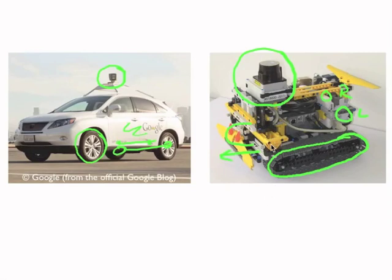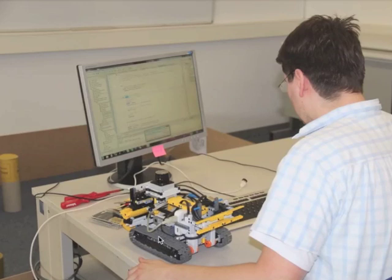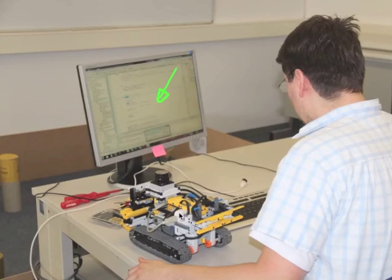Our device is actually much cheaper than the original Google self-driving car. While on the other hand there are some drawbacks — one of them being that this car is actually a self-driving car, whereas our car is currently driven by Daniel. He designed and constructed this device, built the control software, which controls the robot's movements and also retrieves measurements from the laser scanner in real time.